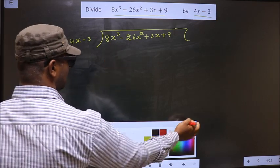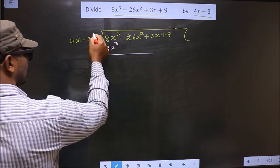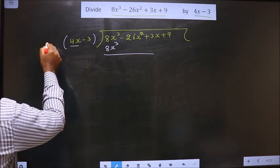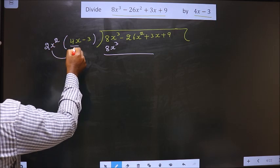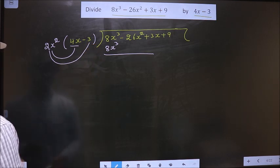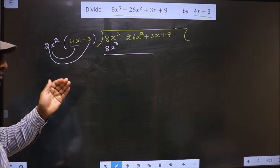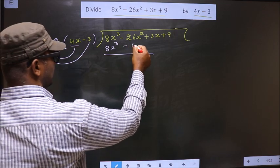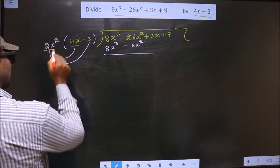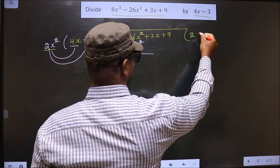Here we have 8x³, so below this we should also get 8x³. Here we have 4x, and to get 8x³ we should multiply by 2x². When multiplying to this term, we should also multiply to the other term, that is minus 3. So 2x² into minus 3 is minus 6x², and below the x² term I write minus 6x². This is the first term of our quotient, so I write 2x² in the quotient.